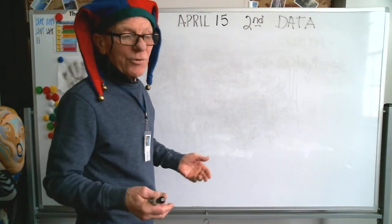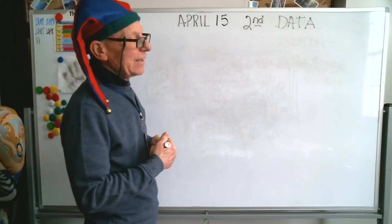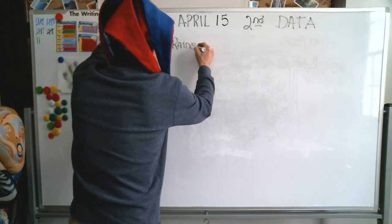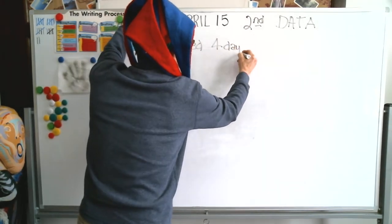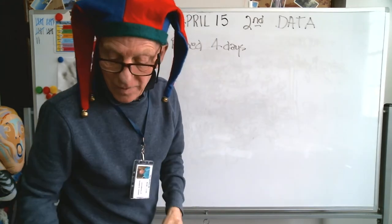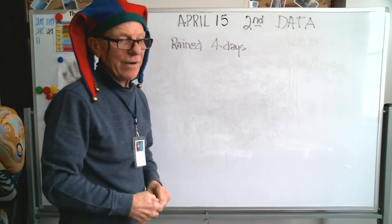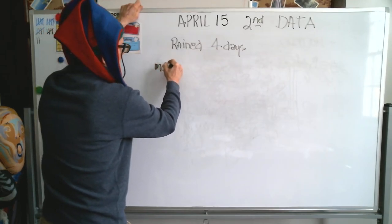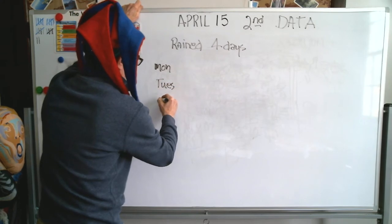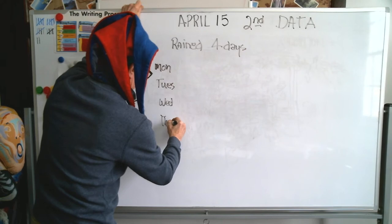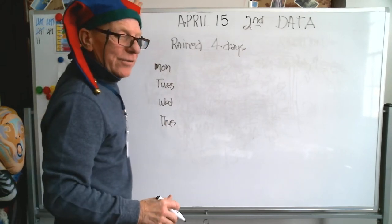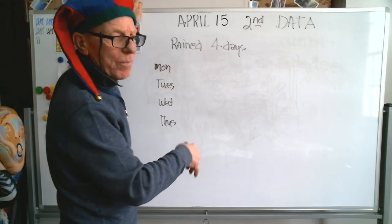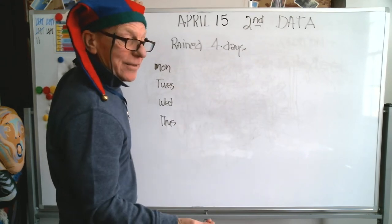But in second grade, you're just being introduced to it — collecting data. Let's just say, for example, it rained for four days here. We don't know what the average rainfall was, but we know that it rained for four days: Monday, Tuesday, Wednesday, and Thursday. What I'm beginning to build here is a data table — a place you put that information so that then you can go back to it and make some sense out of it.